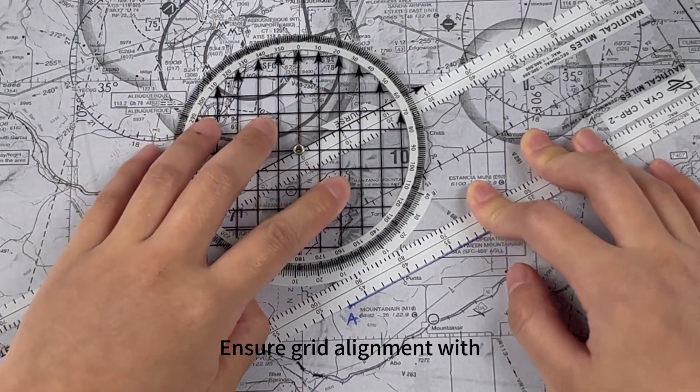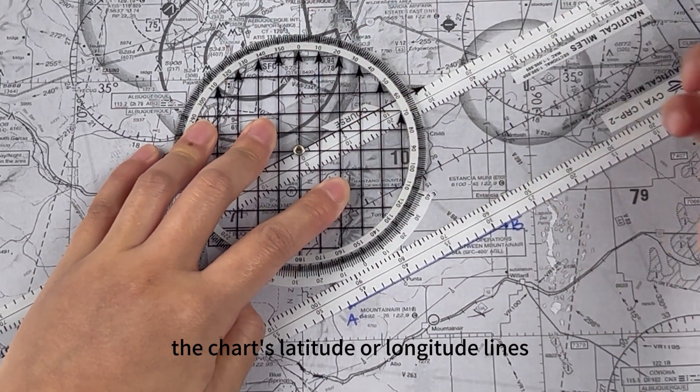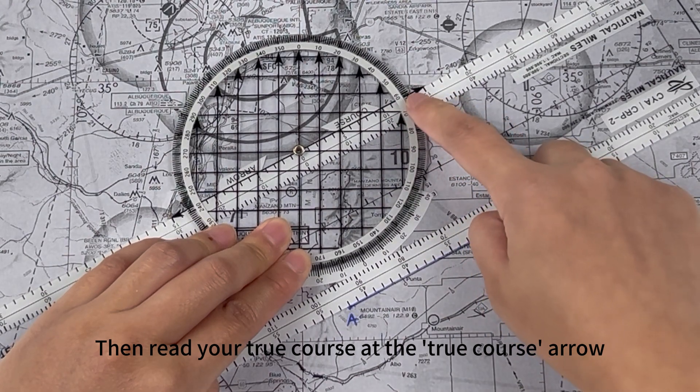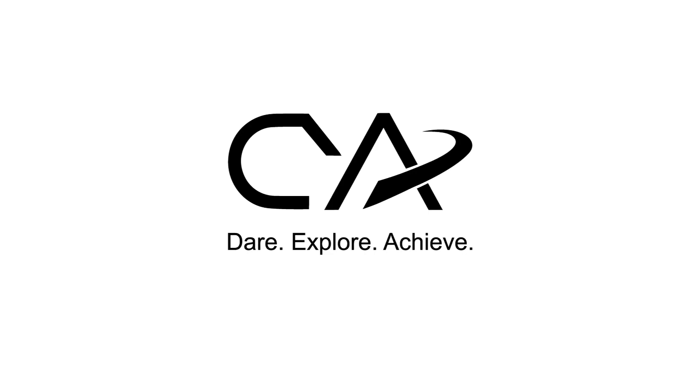Ensure grid alignment with the chart's latitude or longitude lines. Then read the true course at the true course arrow.